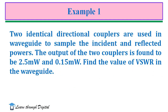First example: two identical directional couplers are used in a waveguide to sample the incident and reflected powers. The output of these two couplers is found to be 2.5 mW and 0.15 mW. Find the value of VSWR in the waveguide. The incident and reflected powers are 2.5 mW and 0.15 mW.